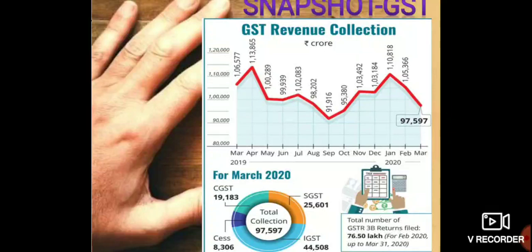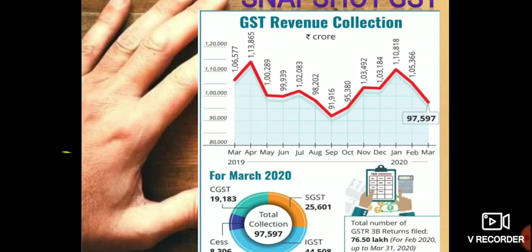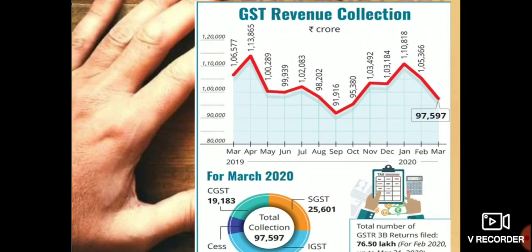In the month of January 2020, GST revenue collection would be around one lakh ten thousand eight hundred and ninety-seven crore. From there again there would be a downfall, and in the month of March 2020, GST revenue collection would be around ninety-seven thousand five hundred and ninety-seven crore.